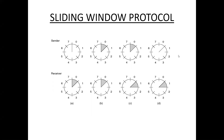In diagram D, the sender received the acknowledgement from the receiver for frame 0. Frame 0 is completed — it was transmitted and its acknowledgement was received — so 0 is unshaded in the sending window. The receiver still waits for frame 1, so the receiving window remains with 1 shaded.